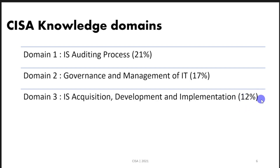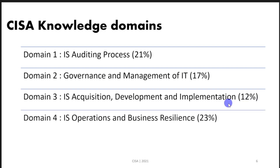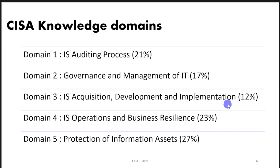Domain 4 covers IS operations and business resiliency, including disaster recovery, business continuity planning, high availability, and failover. Domain 5 covers protection of information assets — a purely information security domain and the largest domain in terms of exam questions. Topics include cryptography, malware, and cyber risk. Don't be afraid — all of this will be discussed in great detail, so enjoy the training and stay motivated to continue.